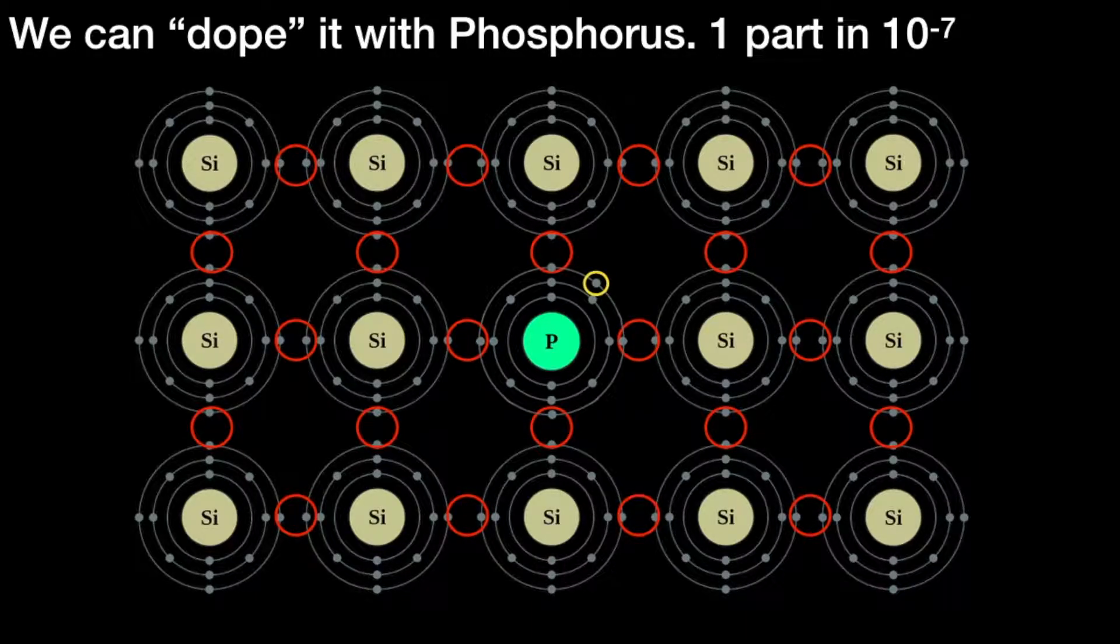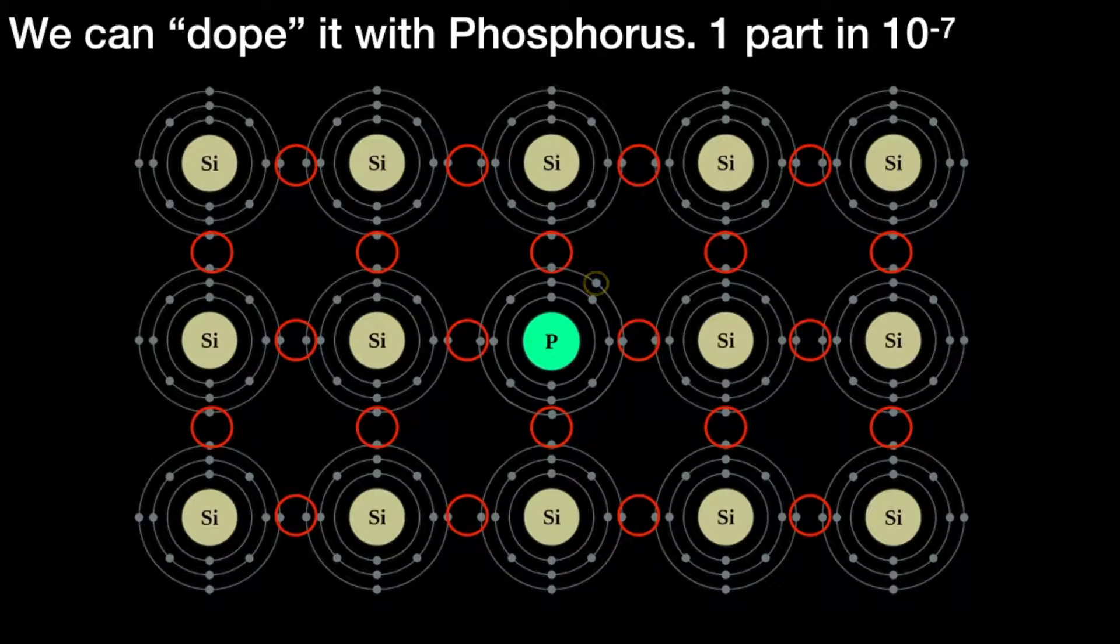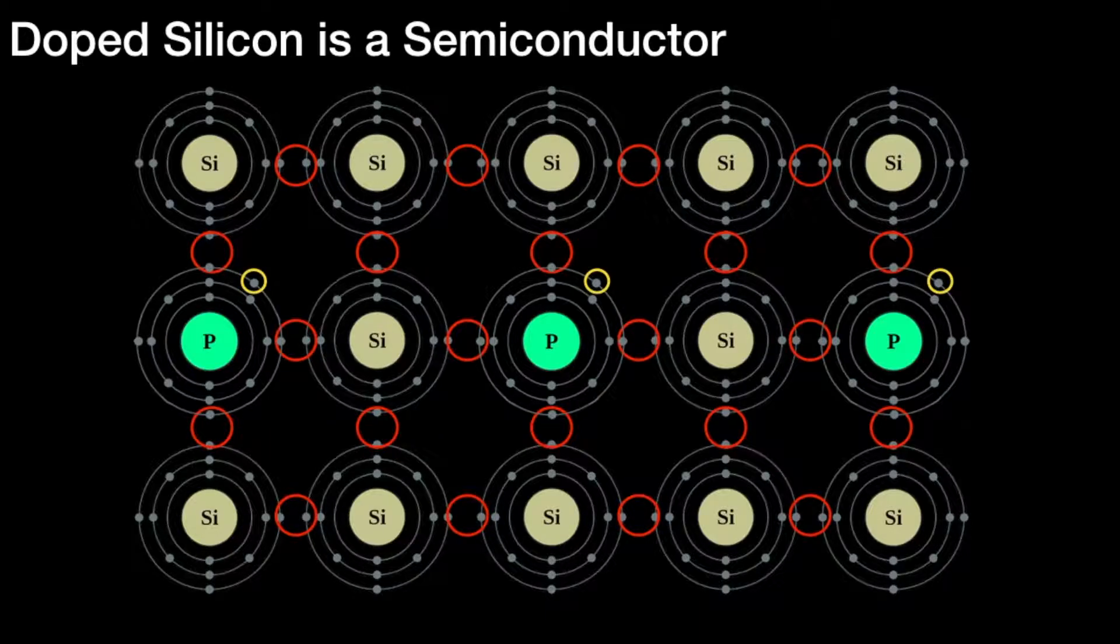If we do that, we notice that phosphorus has five electrons in its outer shell. If I over-represent the amount of phosphorus for illustrative purposes, you can see we've got spare electrons shown with a yellow circle around them, available in the crystal lattice. If a voltage is applied to this crystal lattice, this will allow electrons to move, which is current flow.